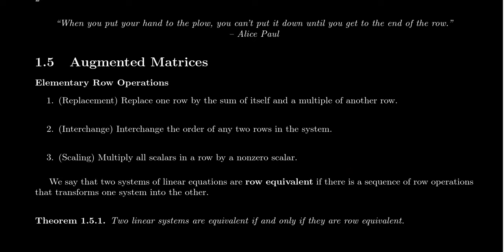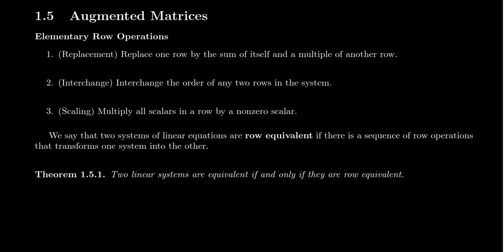This actually leads me to my next point. We say that two linear systems of equations are row equivalent if there's some sequence of row operations, replacement, interchange, and scaling, some sequence of row operations that transforms the first linear system into the other linear system. They're row equivalent systems. Now, what's important about row equivalence is that row equivalence is the same thing as equivalence, which equivalence, as we defined before, this means that they have the same solution set.